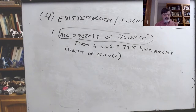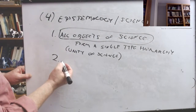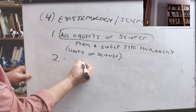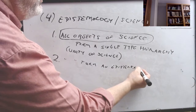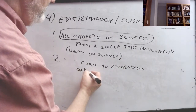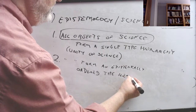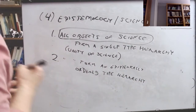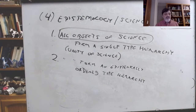They can all be reduced to the fundamental level of the hierarchy. The fundamental task of construction theory is just going to be to show how that can be done with all the concepts we actually use — that is, all the objects we actually talk about in science.